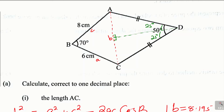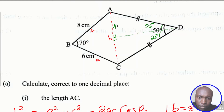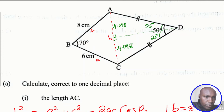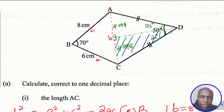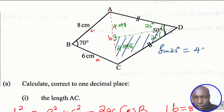Since AC is 8.195, dividing by two gives 4.098 for each half of the diagonal. Using one of the right-angled triangles with the trigonometric ratios — sine will work well — sine of 25 degrees equals the opposite side, 4.098, divided by the hypotenuse, which is DC.